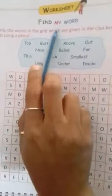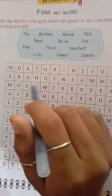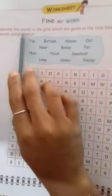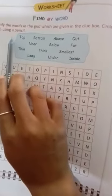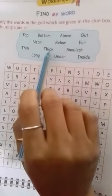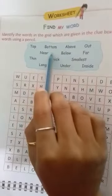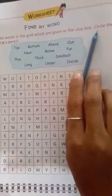Find my word, meaning the words given here, you have to find them. Identify the words in the grid which are given in the clue box. Circle the words using a pencil. Some spellings are given here. The clues given, you have to find those clues here and circle them with a pencil.